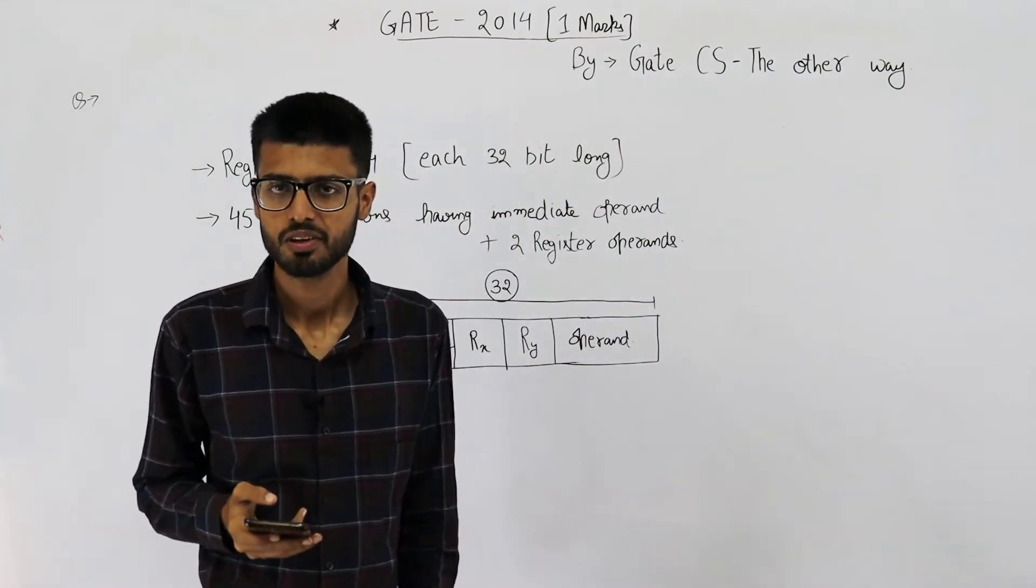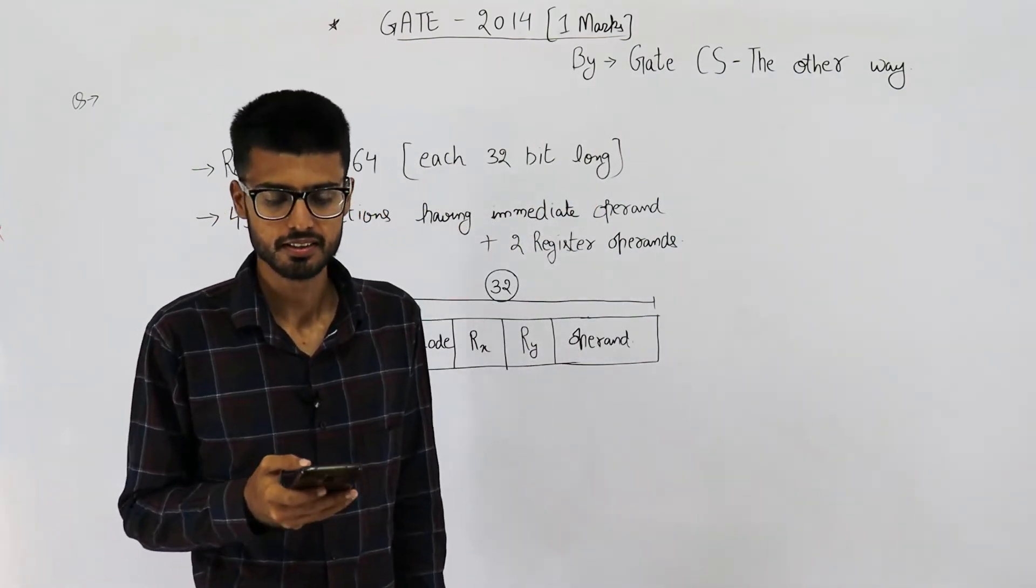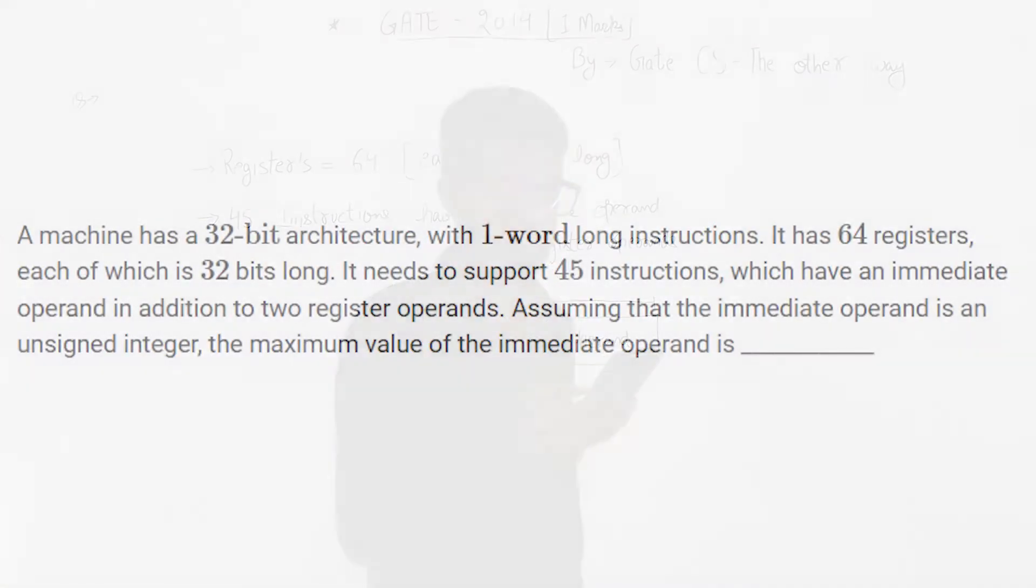Welcome people. This question from GATE 2014 reads: A machine has a 32-bit architecture with one-word long instructions. It has 64 registers, each of which is 32 bits long.